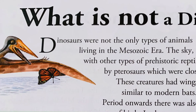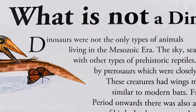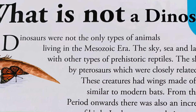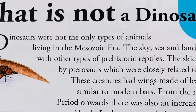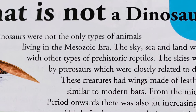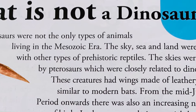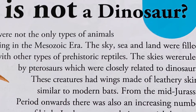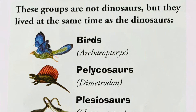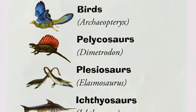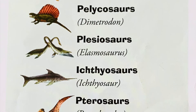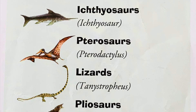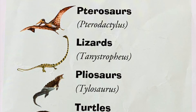What is not a dinosaur? Dinosaurs were not the only types of animals living in the Mesozoic era. The sky, sea and land were filled with other types of prehistoric reptiles. The skies were ruled by pterosaurs, which were closely related to dinosaurs. These creatures had wings made of leathery skin, similar to modern bats. From the mid-Jurassic period onwards, there was also an increasing number of birds.